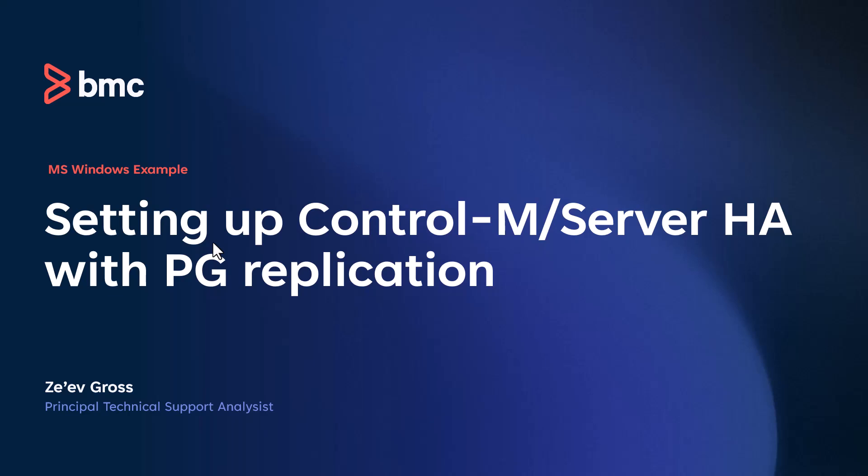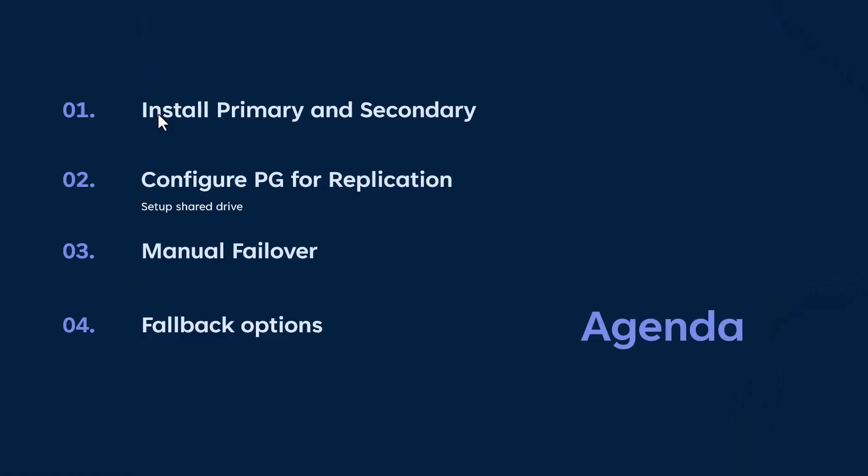Hi, and welcome to Control-M's short video on installing Control-M Server High Availability with PG Replication. My name is Zev Gross, and I'm the Principal Technical Support Analyst at BMC Software. First, we will review how to install the primary and secondary Control-M Server. Second, we'll cover configuring Postgres database for replication. Then we will cover how to do a manual failover, and finally, we will go over the options for fallback and restoring HA configuration.